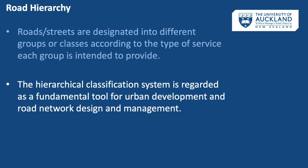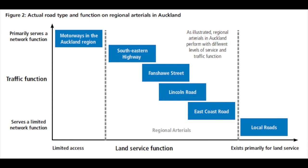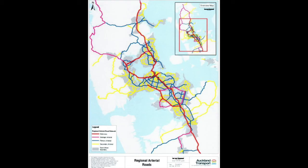Auckland has a road hierarchy as well. Auckland Transport has recently updated and reviewed Auckland's road hierarchy — previously, city and district designations had their own road hierarchy and definitions. This task included reviewing the terminology and definitions of road types, reviewing and updating the primary arterial network (previously referred to as the regional arterial network), and providing a more consistent application of secondary arterials and collectors for both urban and rural road networks.